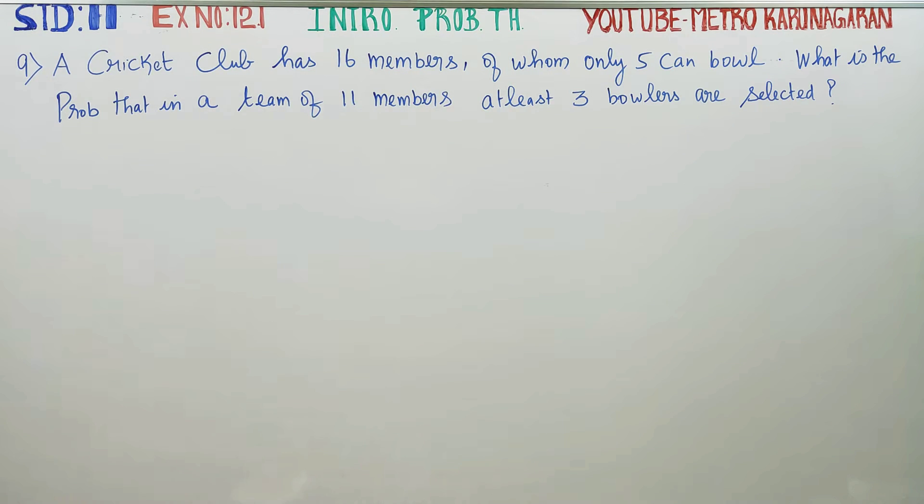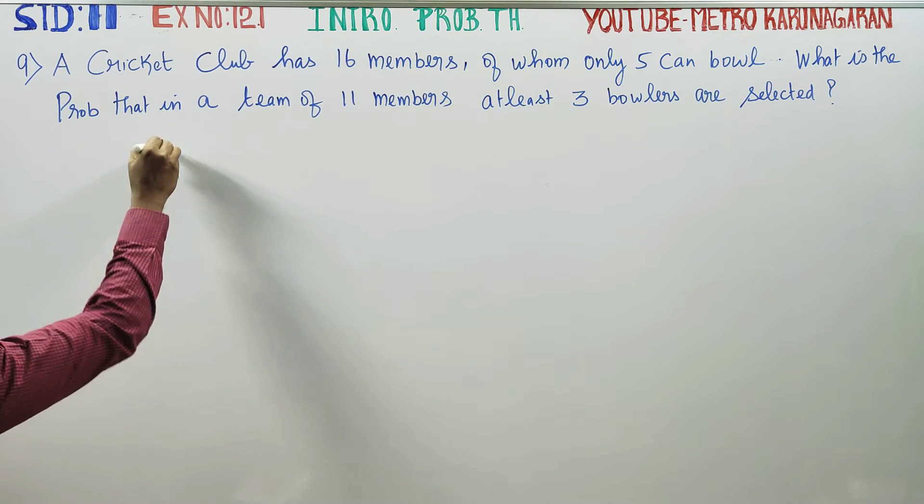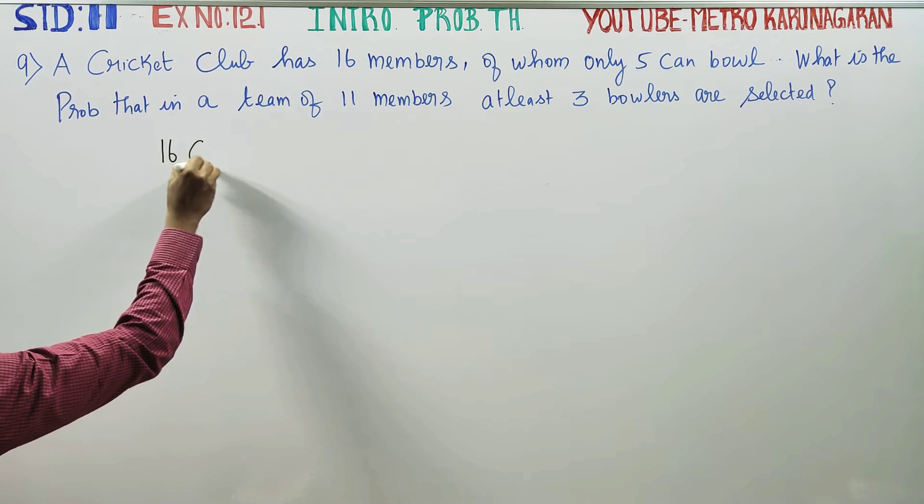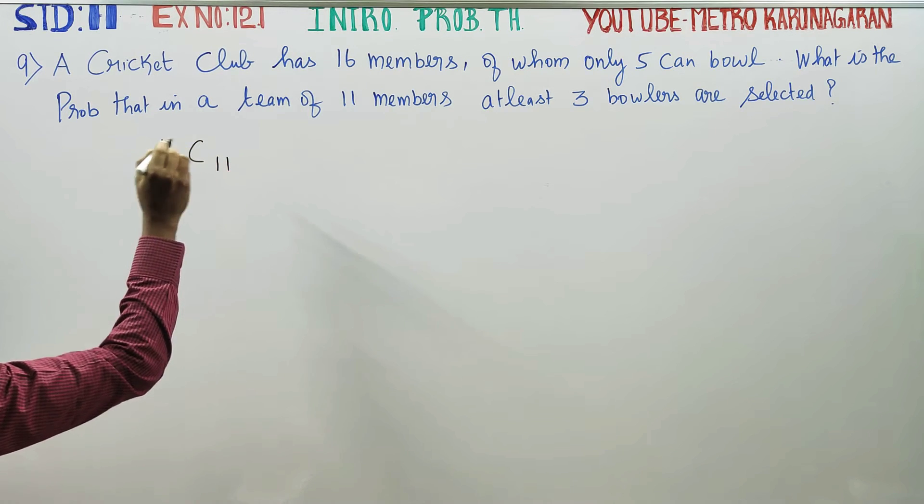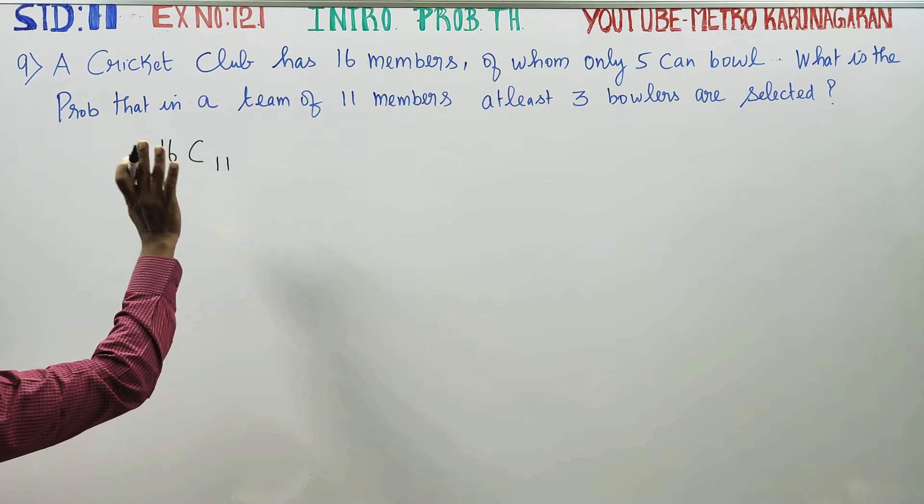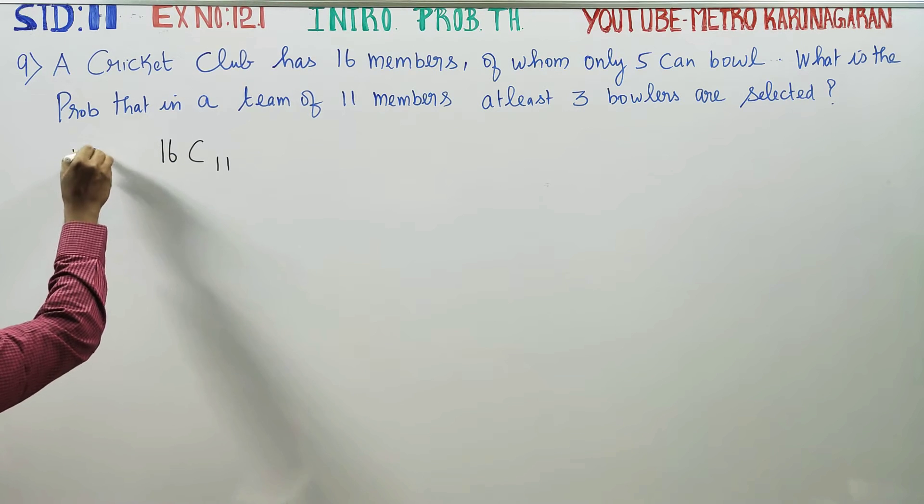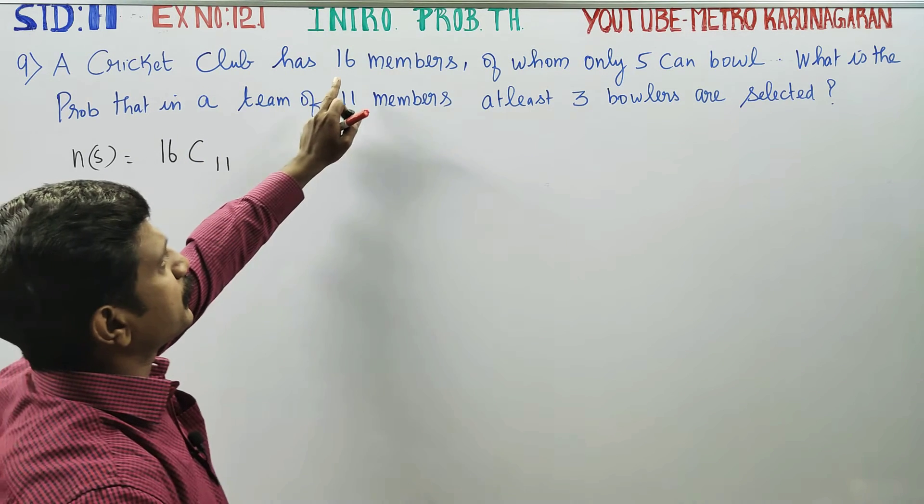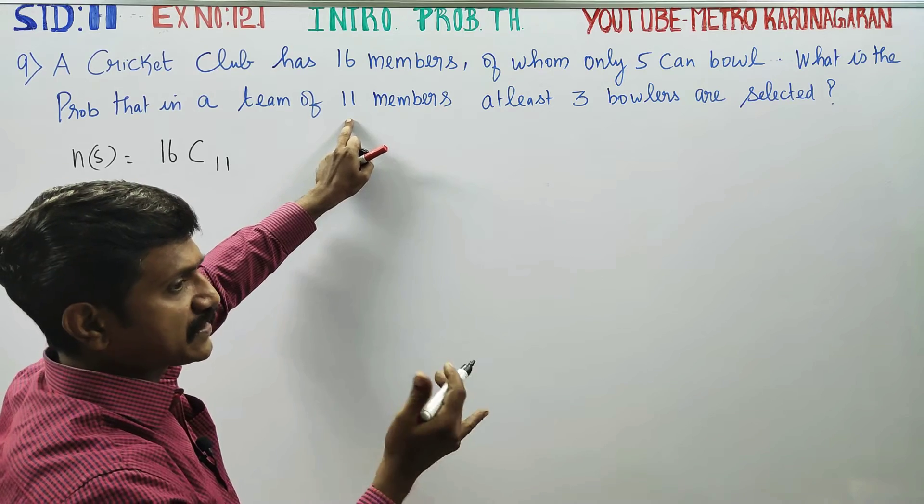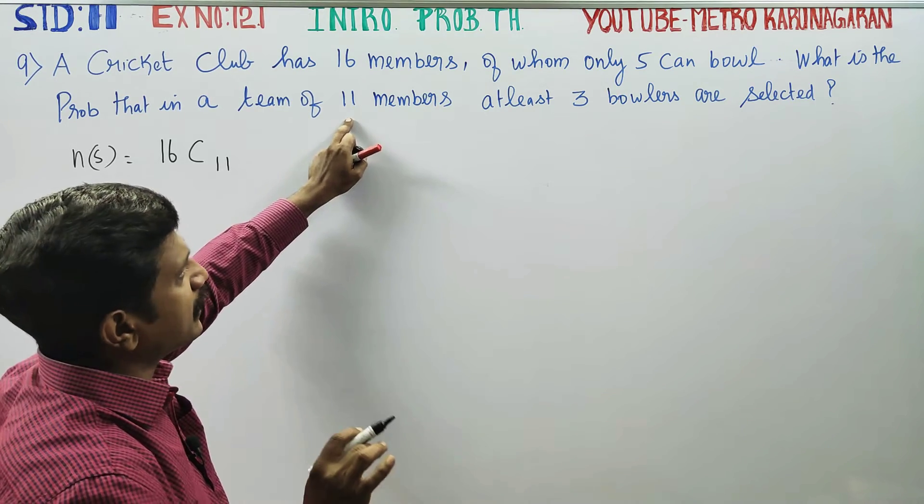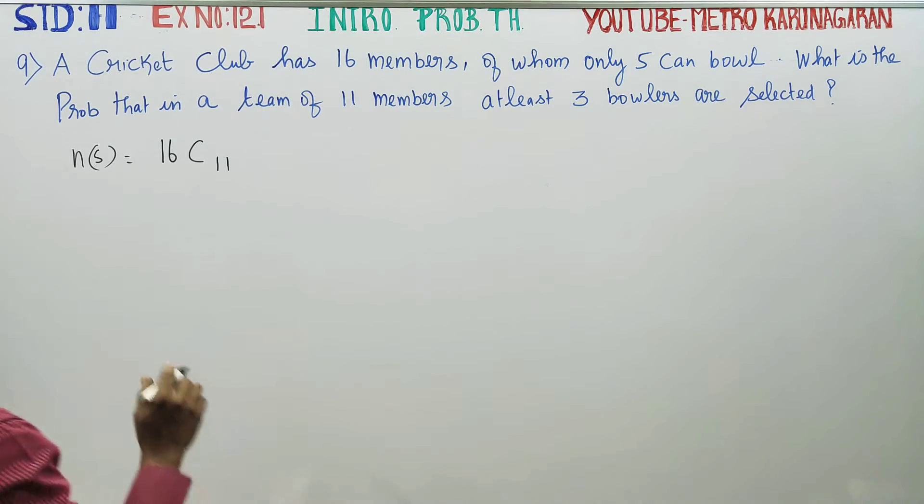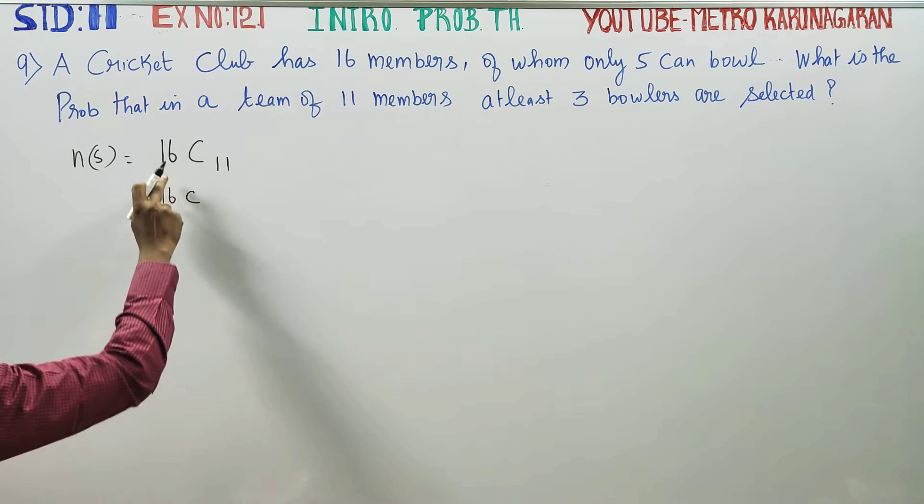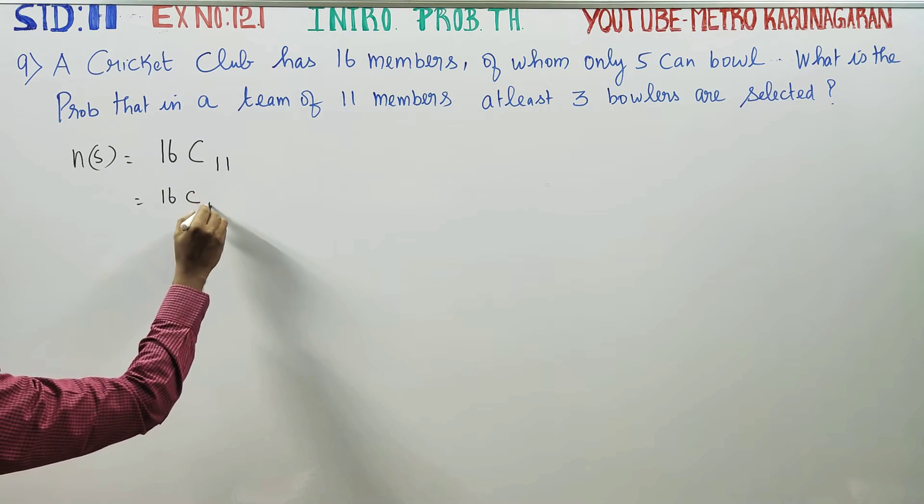At least 3 bowlers. First of all, we have 16 members, so we choose 11 members. This is my first case. We have 16 players, so we have 11 players, so we have team ready. That's why we have 16C11.